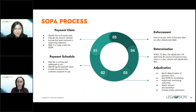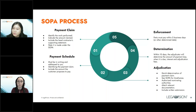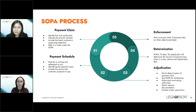The main requirements under the legislation are that the payment claim has to identify the construction work to which it relates. This is an important point because in many adjudication processes, respondents have successfully argued that a payment claim was invalid because it was too vague or not specific enough. So when putting together a payment claim, make sure it's very clear what exactly is included. There may be a general understanding between the parties, but it's always good to have it properly set out and explained in writing.